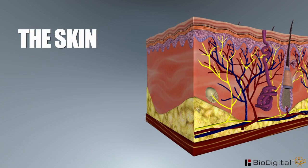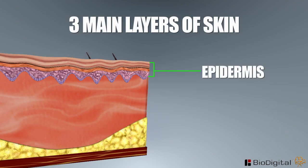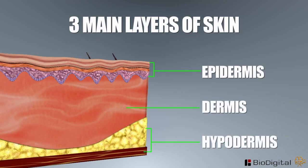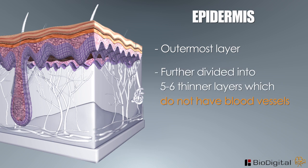The skin is composed of three main layers: epidermis, dermis, and hypodermis. The epidermis is the outermost layer of skin. This layer is further divided into five to six thinner layers which do not have blood vessels.